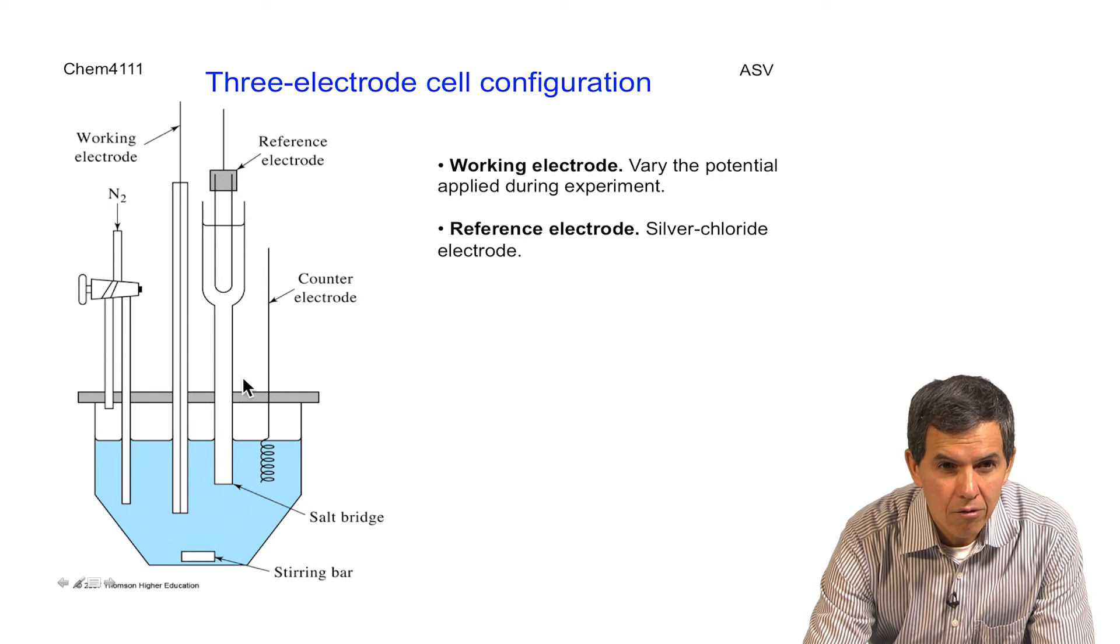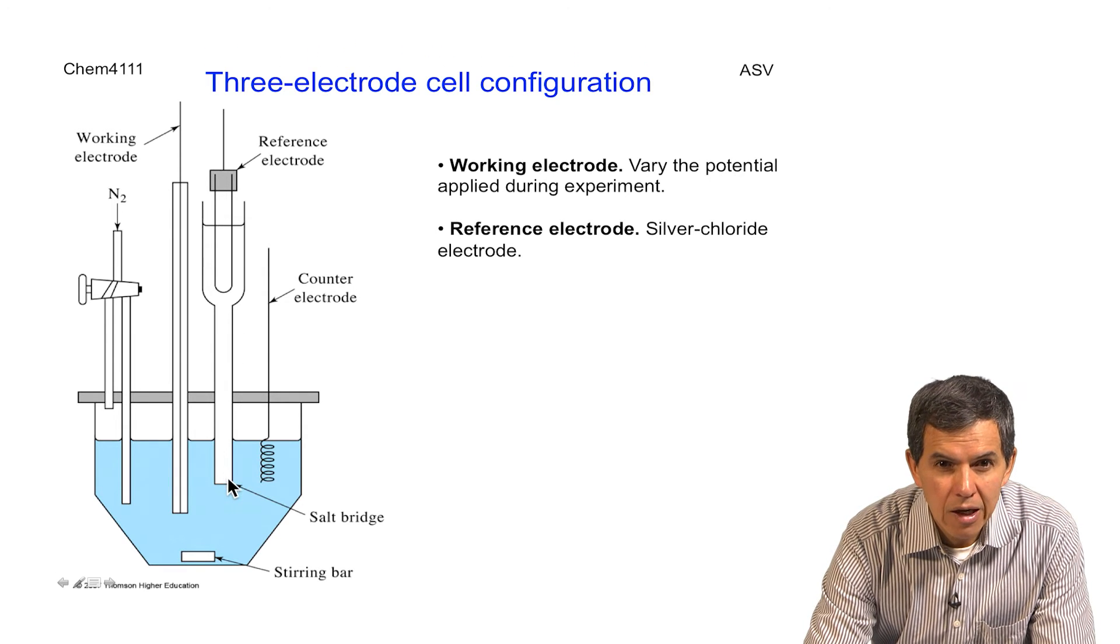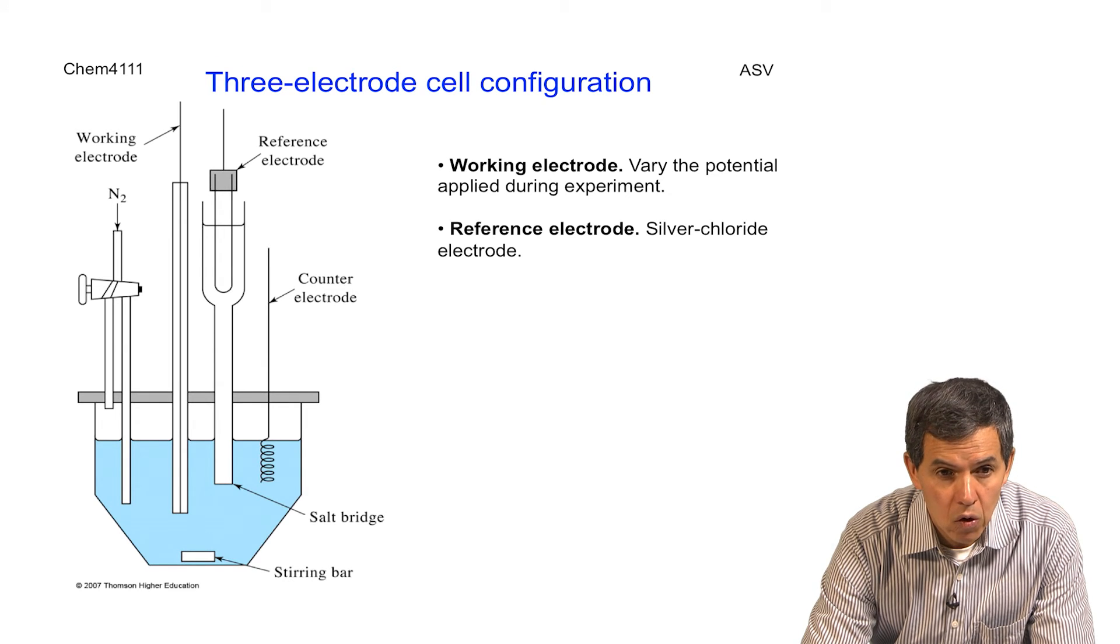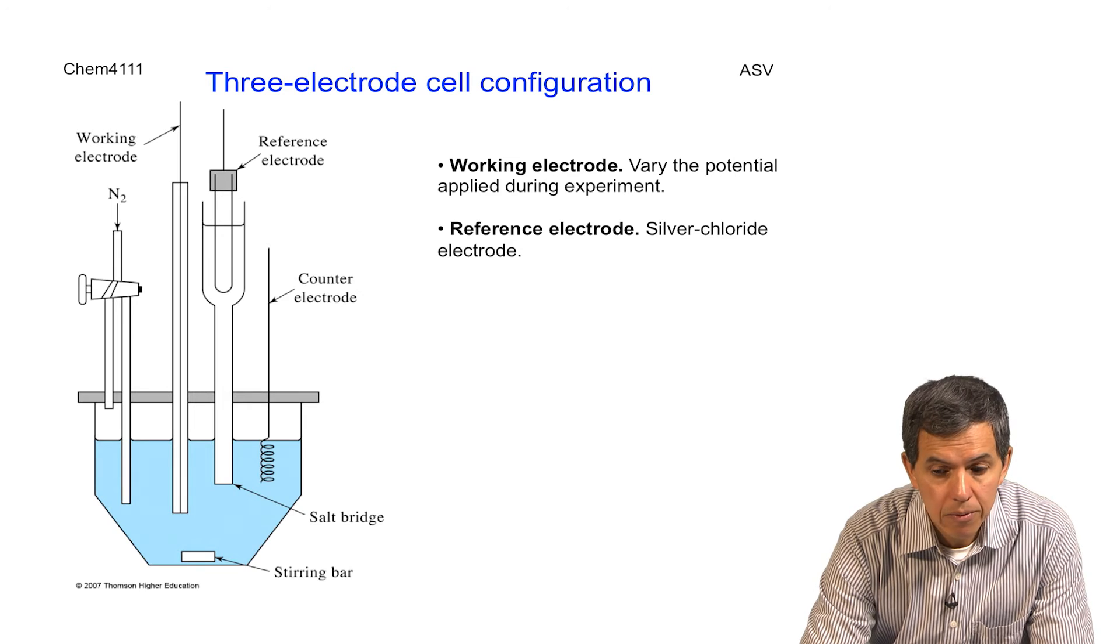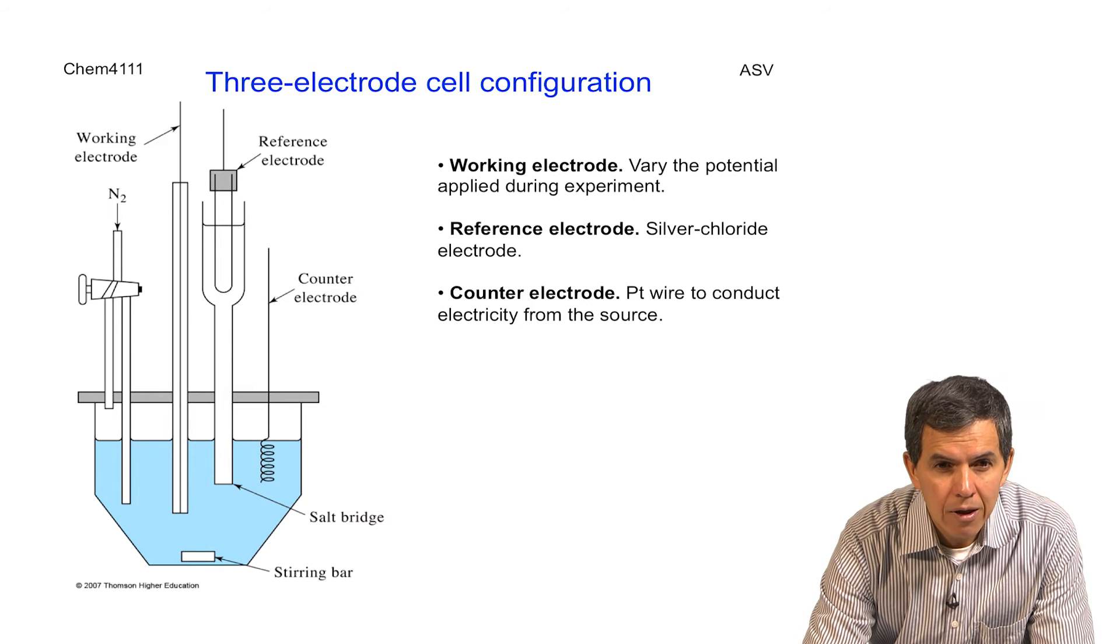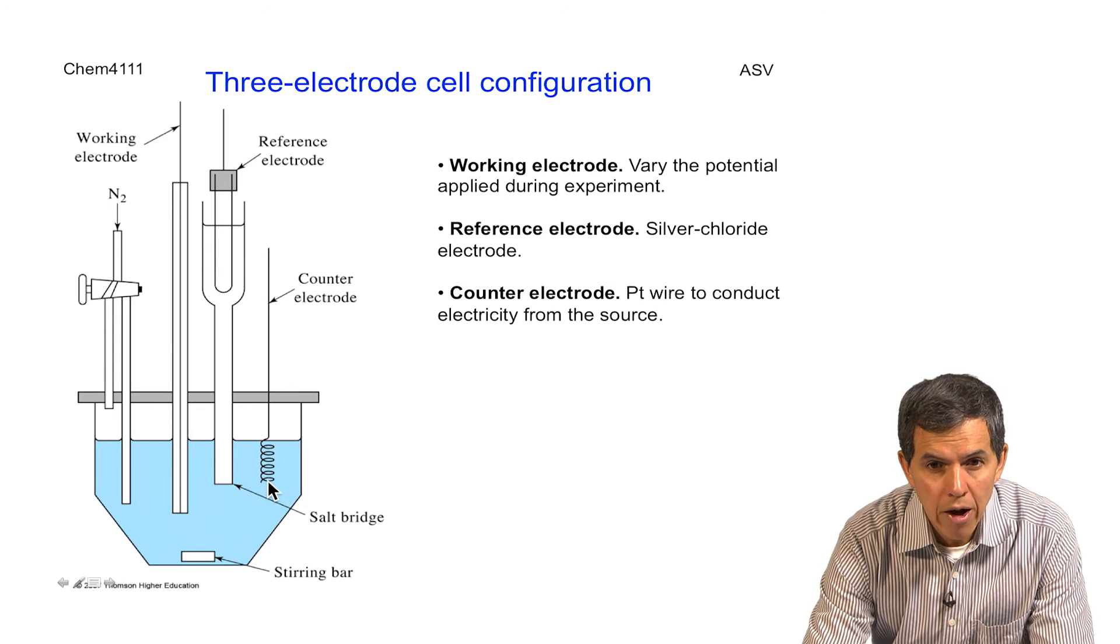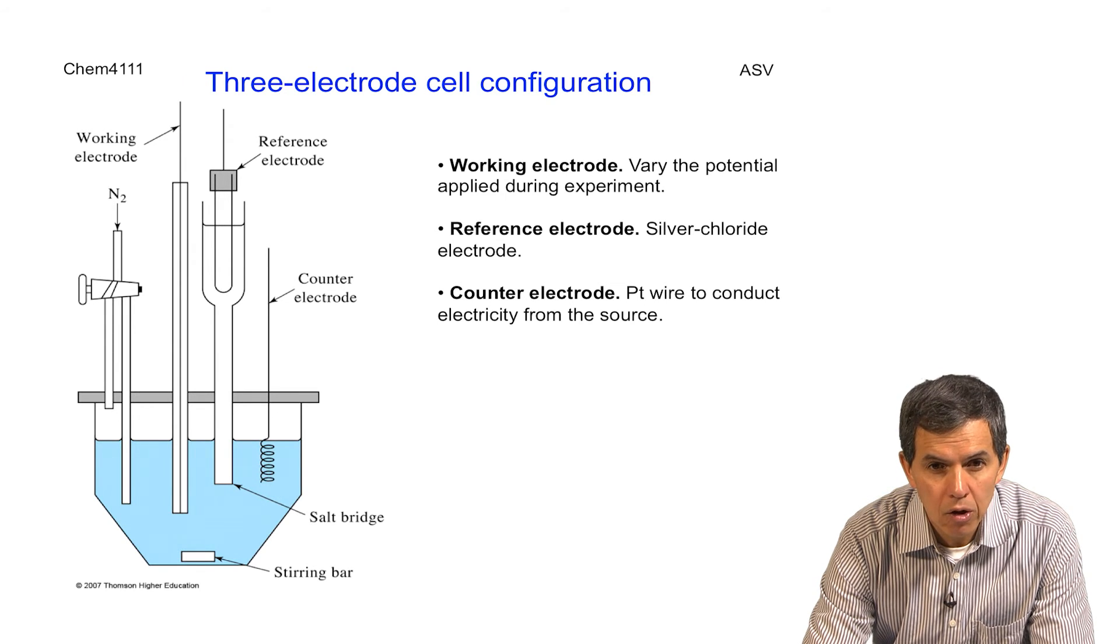The second electrode is the reference electrode. The reference electrode is typically a silver chloride electrode and allows any measurement that is done in terms of potential to be relative to this electrode that has a constant potential. It is very reliable, very robust. And finally, we have the counter electrode. The counter electrode is usually a platinum wire, which is inert and provides the way to conduct electricity in the circuit from the source.